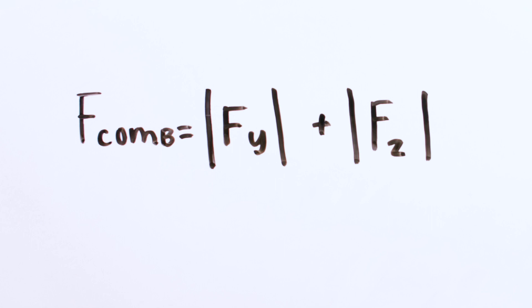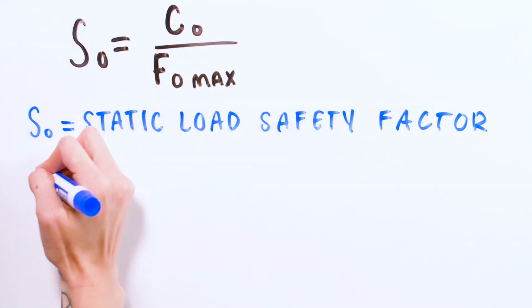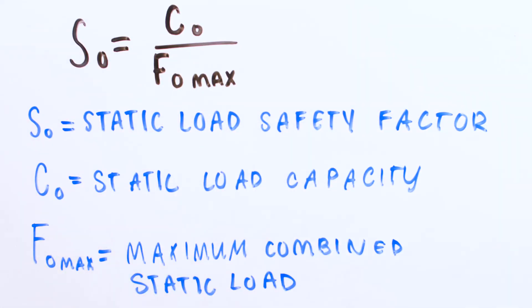Once you've calculated the combined static load, you can use this to determine the static load safety factor. The static load safety factor is calculated by dividing the basic static load rating by the combined static load of the most heavily loaded bearing.